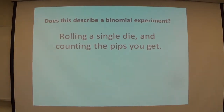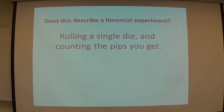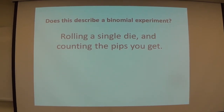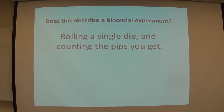Here's a random variable. Here's an experiment: we throw a die. The random variable is defined to be the pips that you get on the roll. Binomial? Patrick's shaking his head no. We've got Shelby shaking her head no. We've got John shaking his head no. I'm hearing lots of no's.